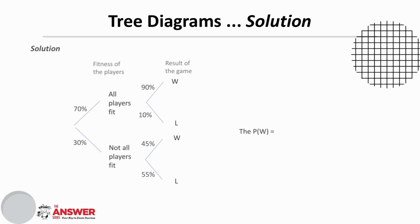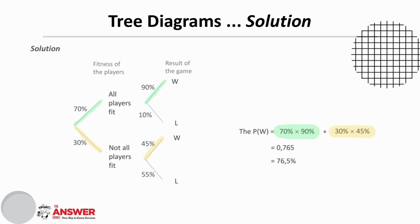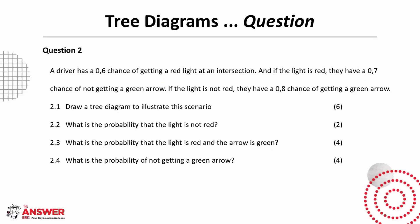One option of winning is along here if all players are fit, and the other option of winning is along here if not all players are fit. We find the product along each of these paths and then add the two together to get the probability of them winning their next game, and this is 76.5%.